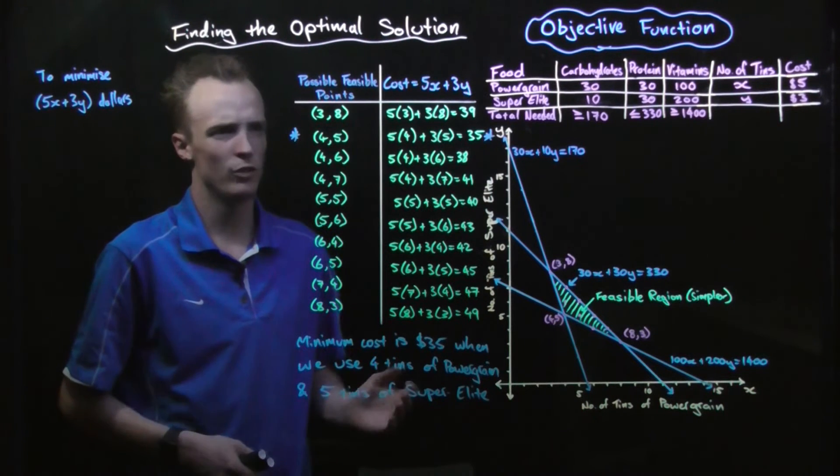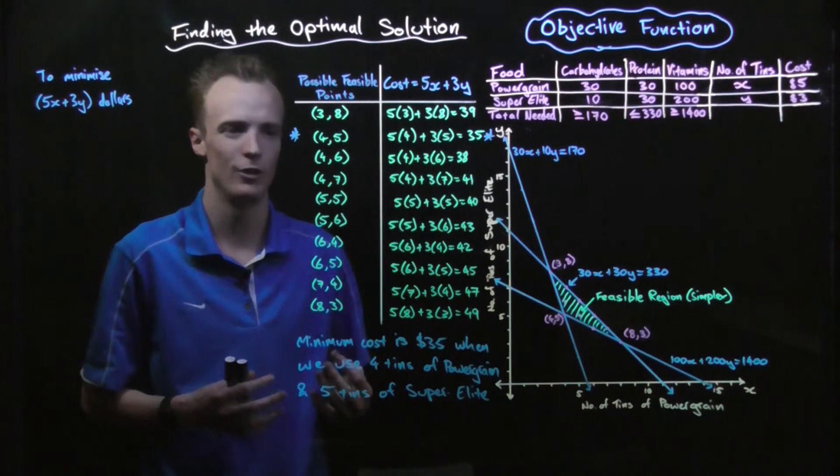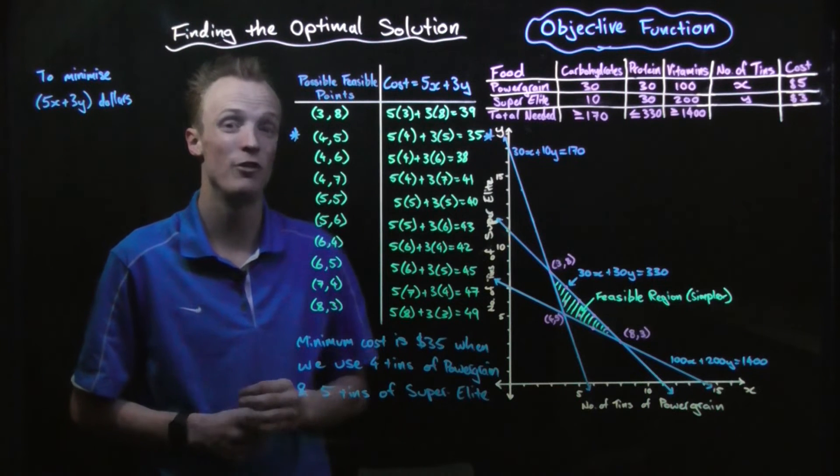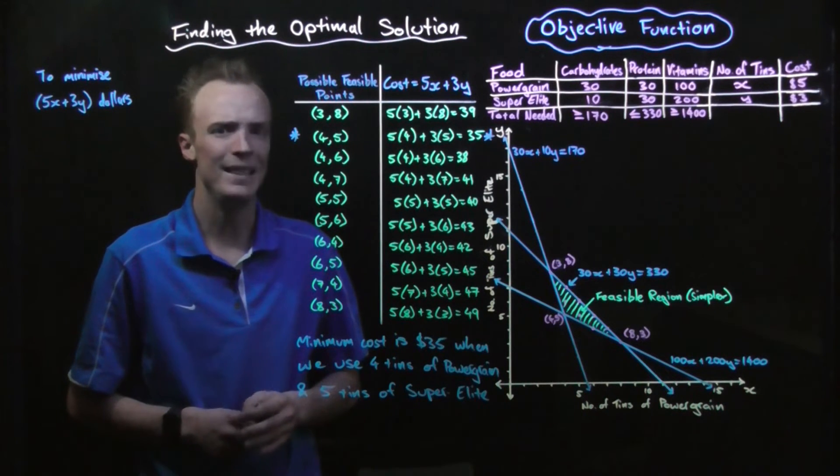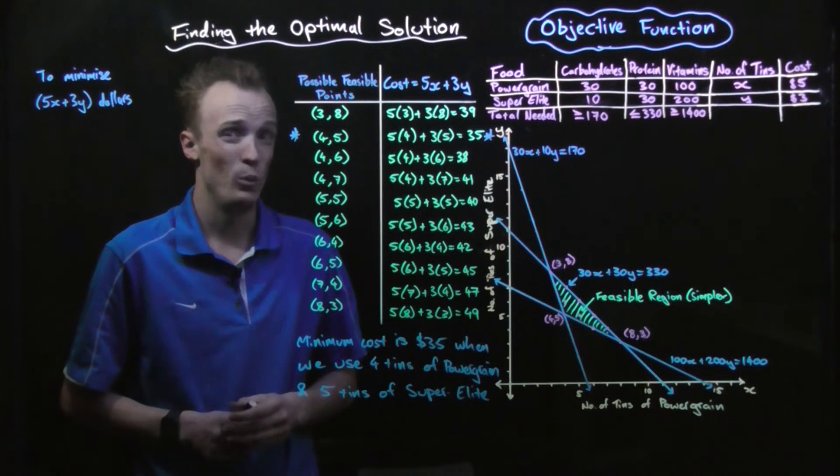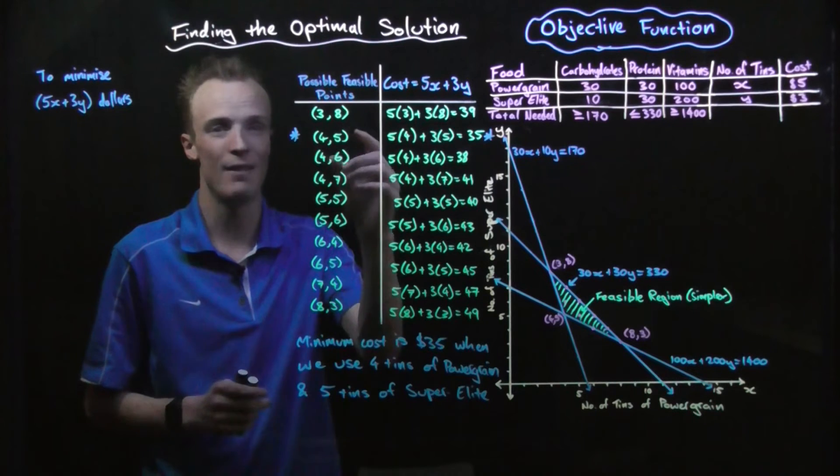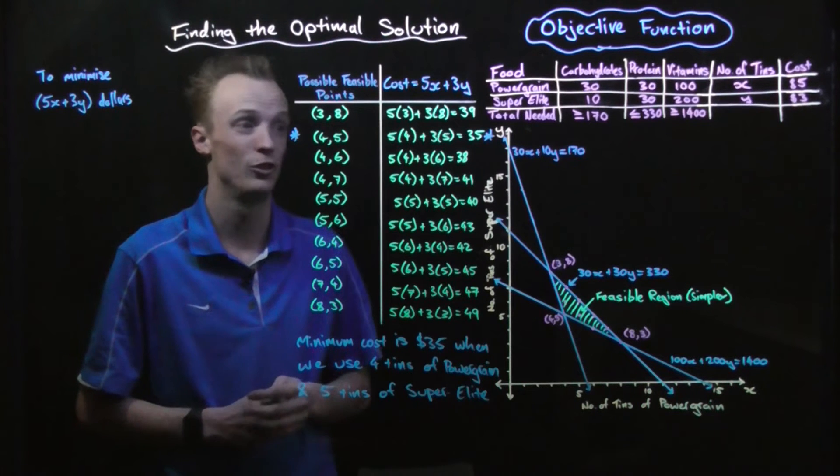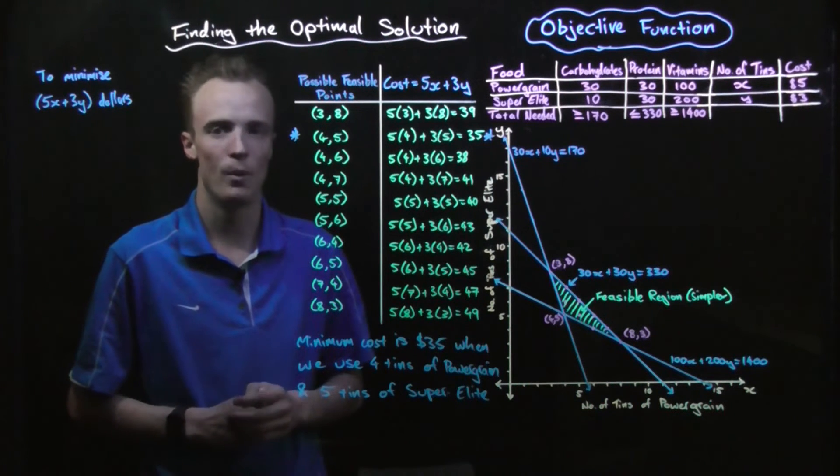But could you imagine for a moment if we had more feasible solutions than just the 10 we had here? What if we had a hundred of them, or a thousand of them, or a million of them? Would we really want to have to go through every single combination to find which one meets our optimal solution? Well, luckily there's an easier way.